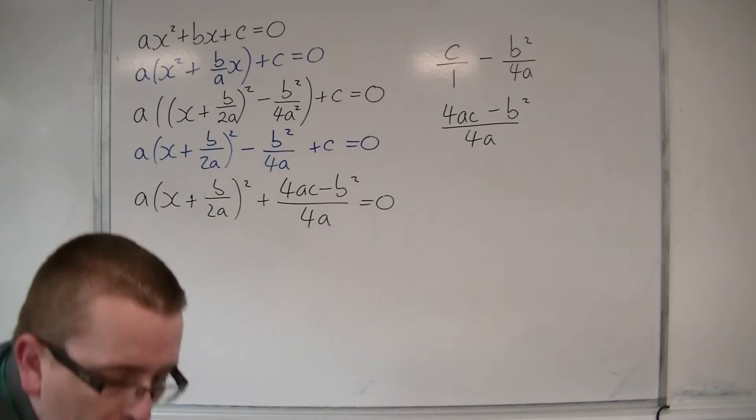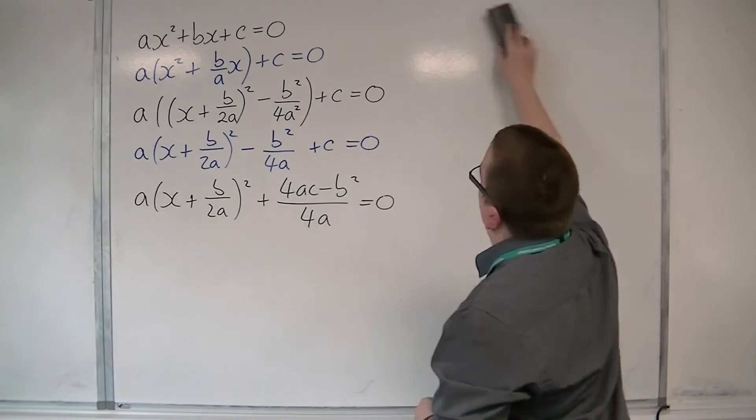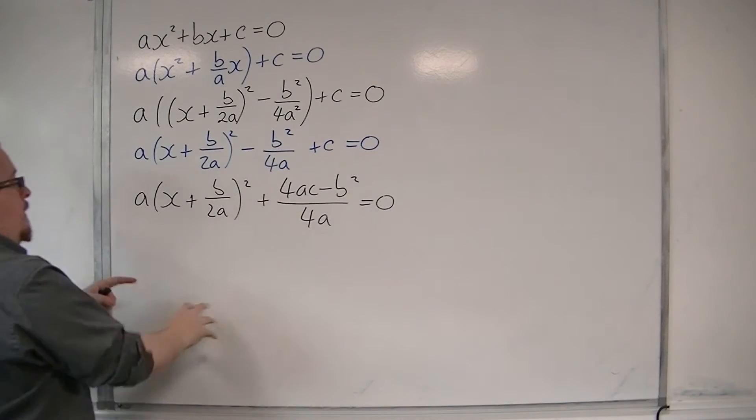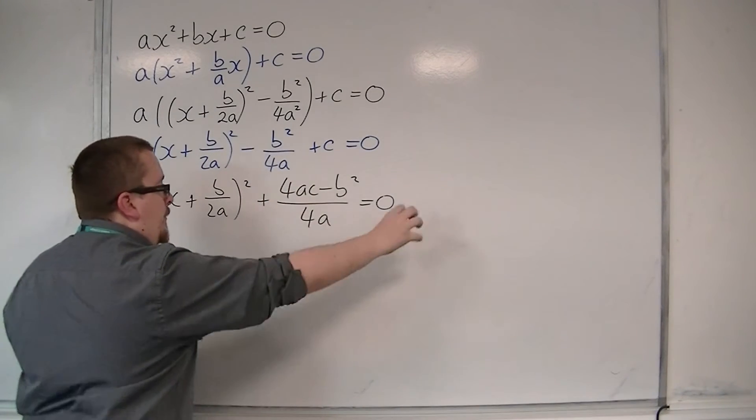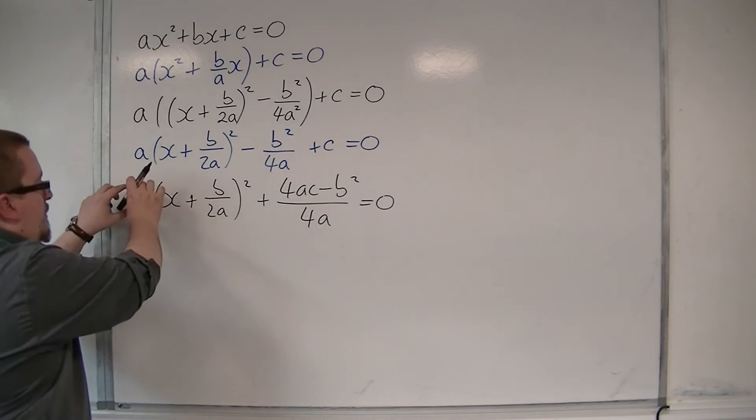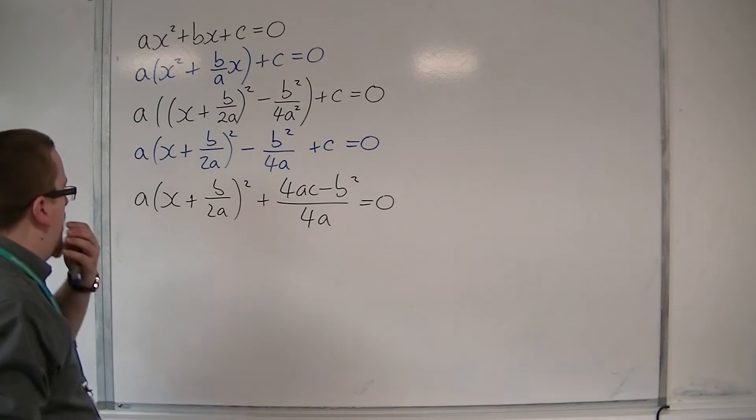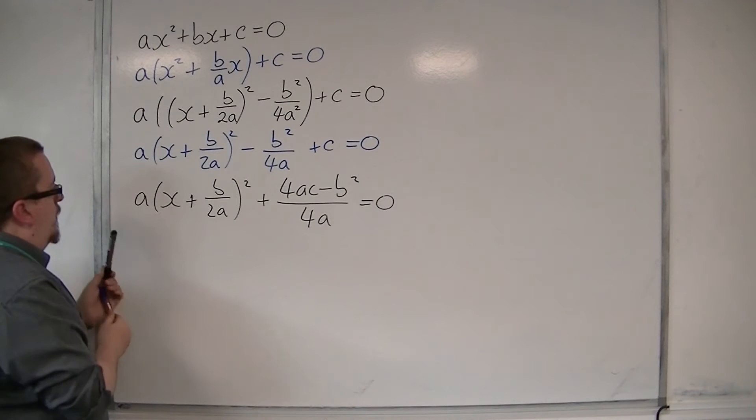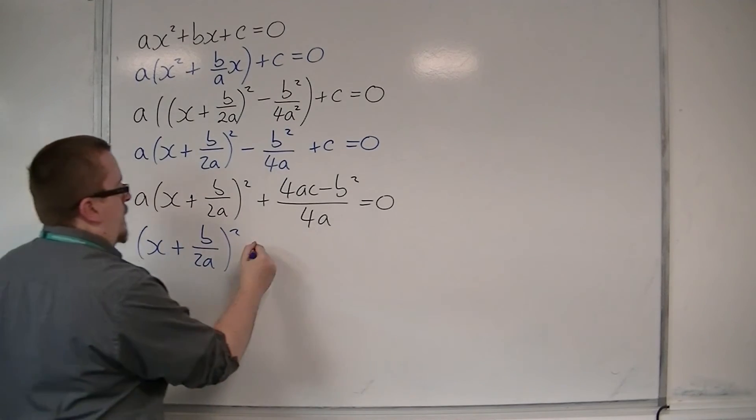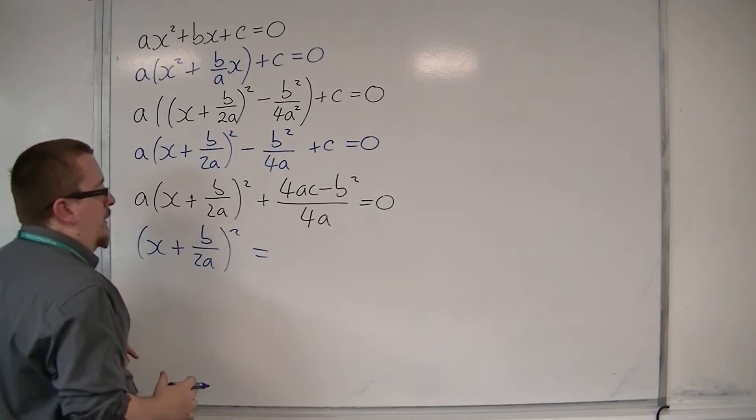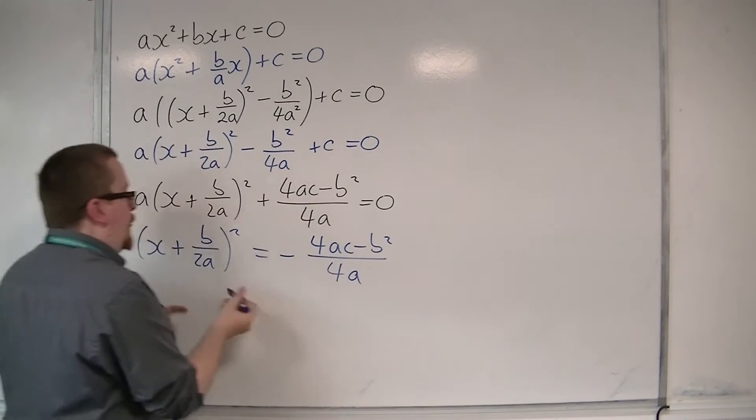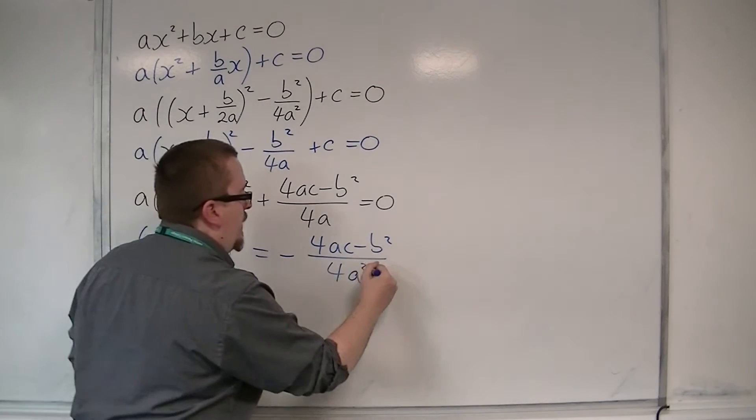The next thing I'm going to do is I'm going to subtract this from both sides, and I'm going to divide through by that a as well. So I'm going to get x plus b over 2a, all squared. I've now moved this over to the right-hand side, so I'm going to have minus 4ac minus b squared all over 4a. And I've also divided through by the a, so I'm going to have that as 4a squared.